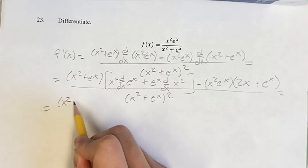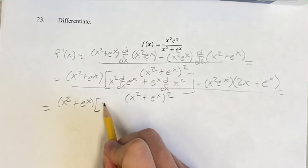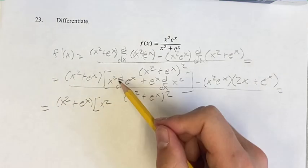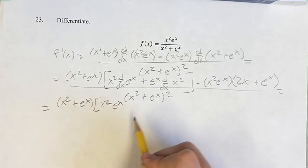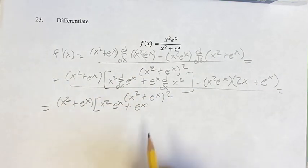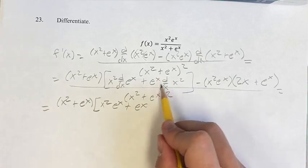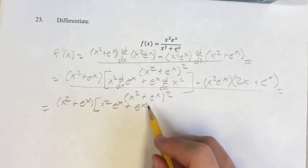So, x squared plus e to the x, times x squared times the derivative of e to the x — which is just e to the x — plus e to the x times the derivative of x squared, which we just showed was 2x.